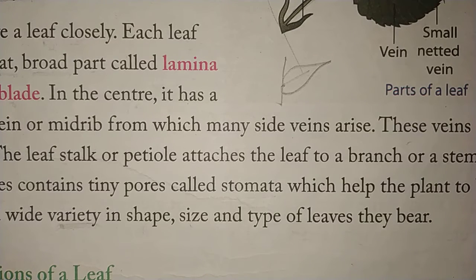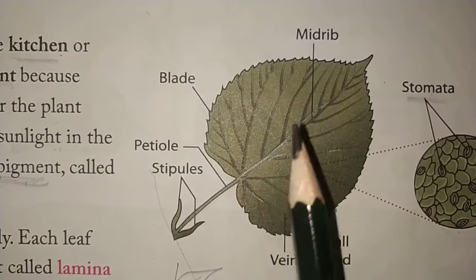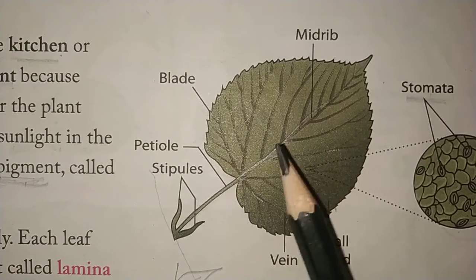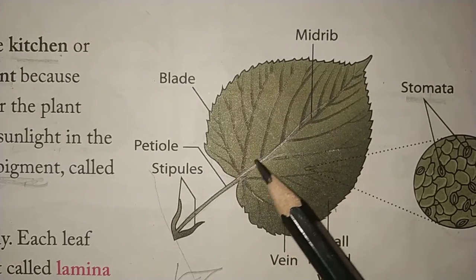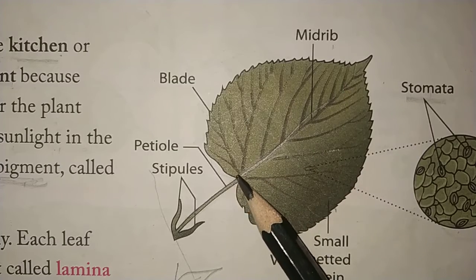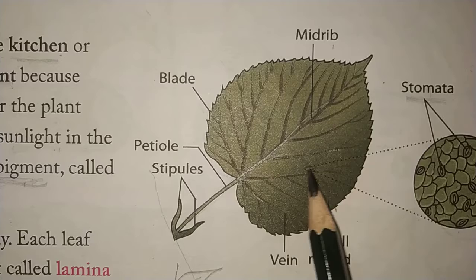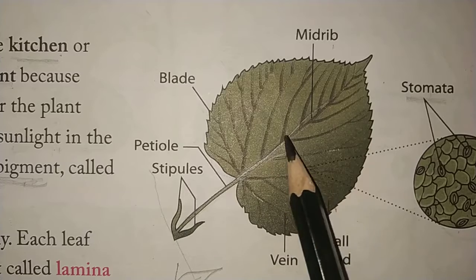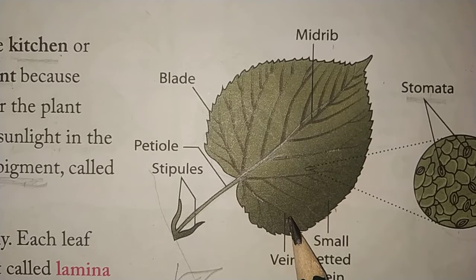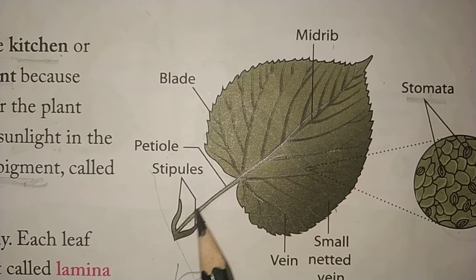So to recap: leaves are the kitchen of the plant. The flat broad part is the lamina. After the lamina, we have the mid-rib. Then there are different veins which transfer food and water throughout the leaf. Then we have the petiole, which connects the leaf to the stem.